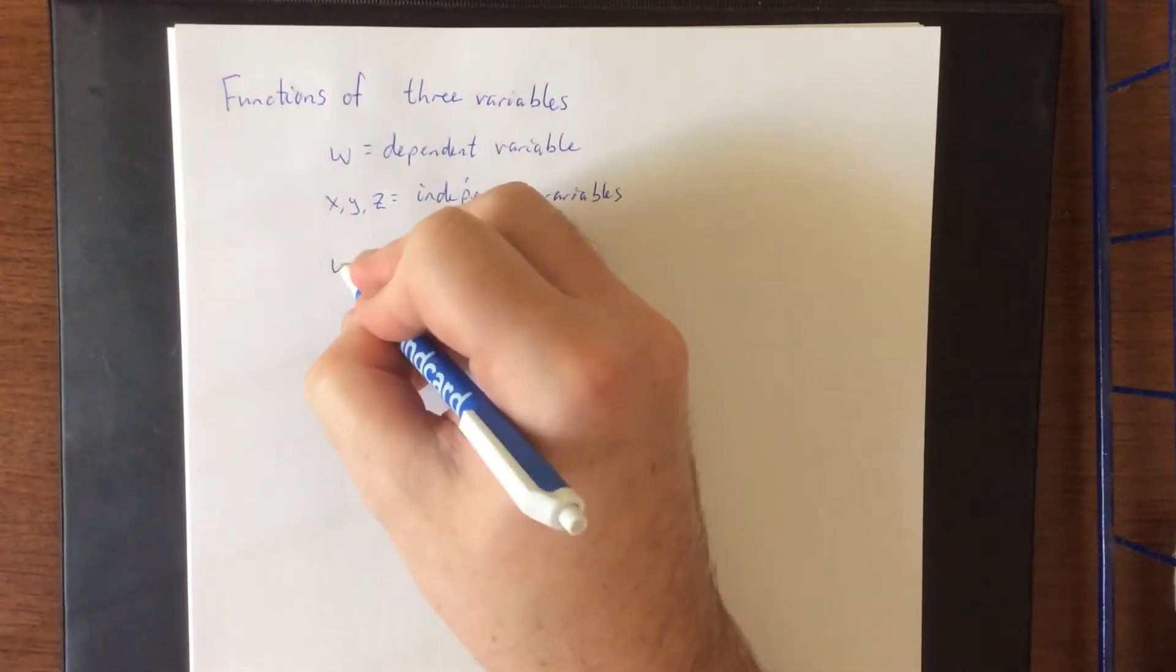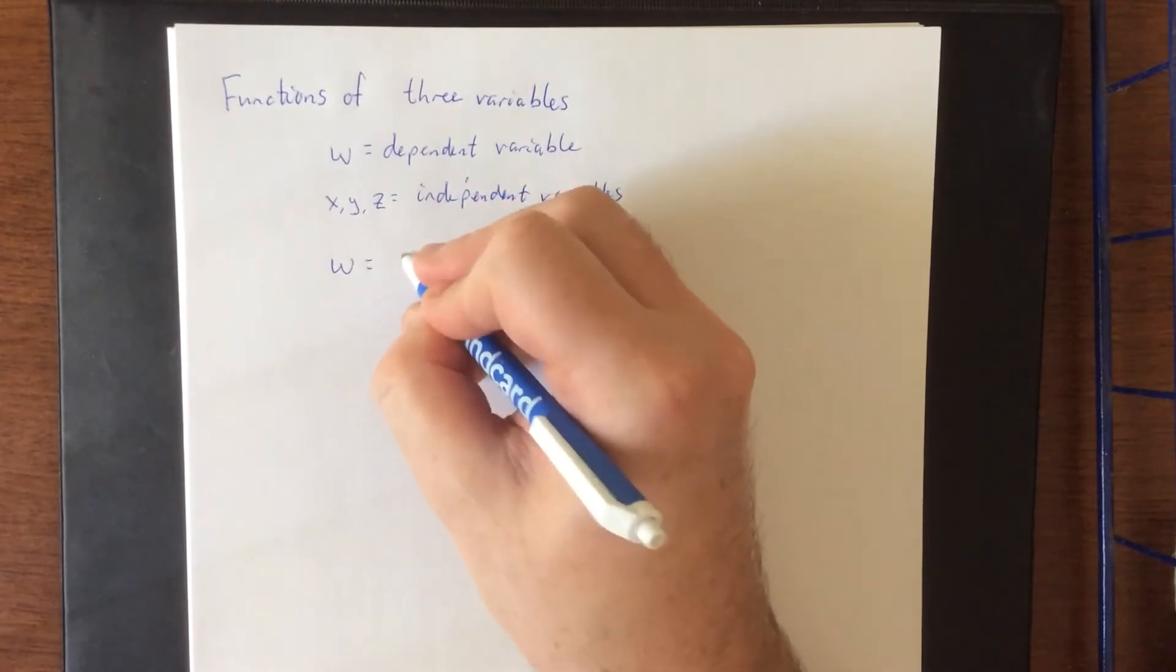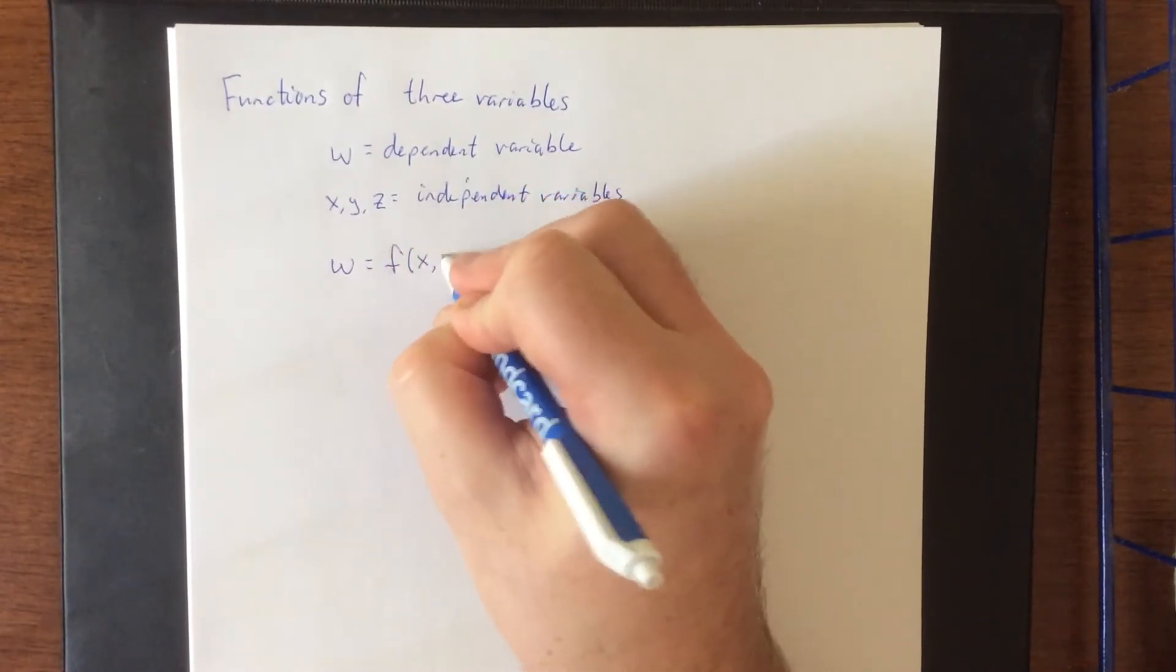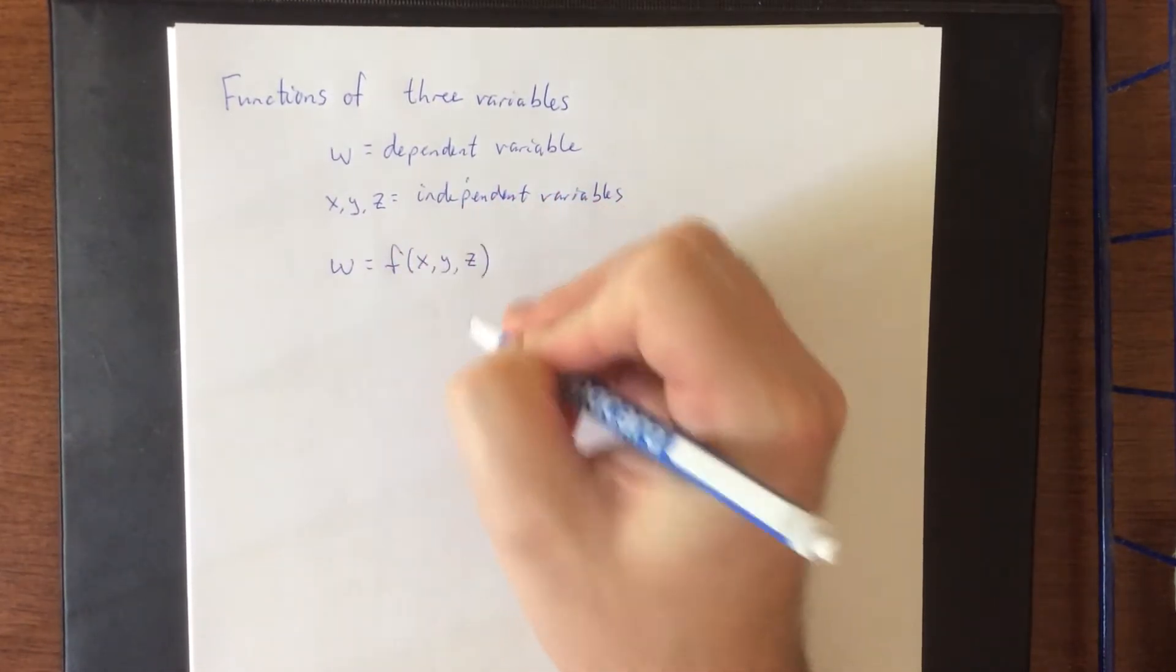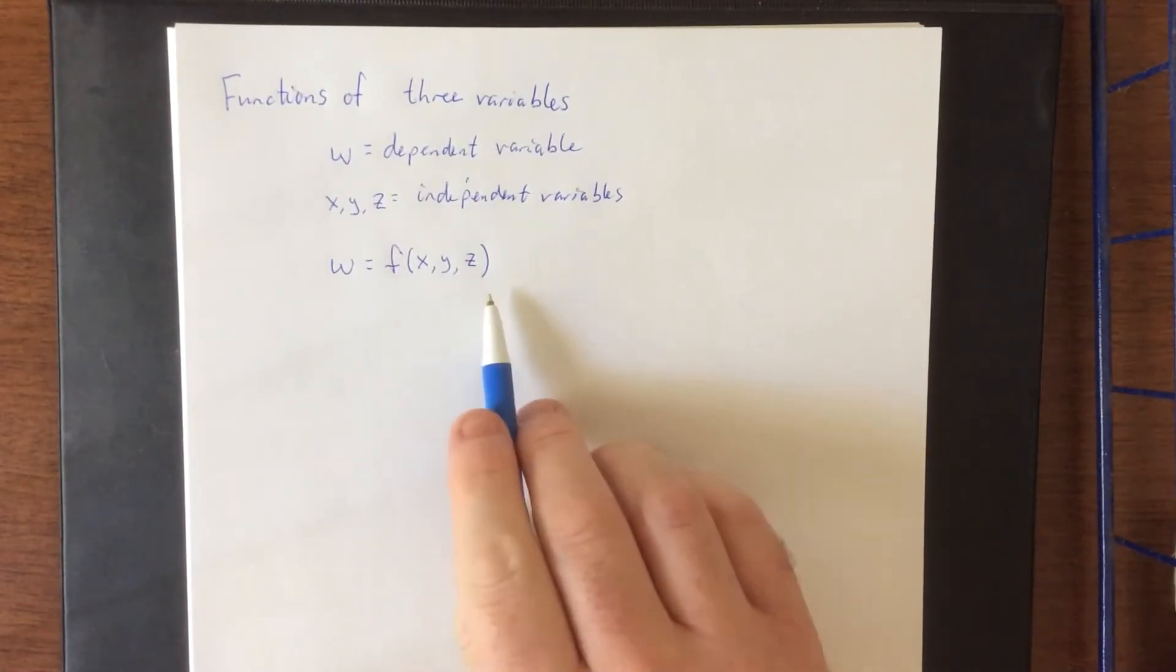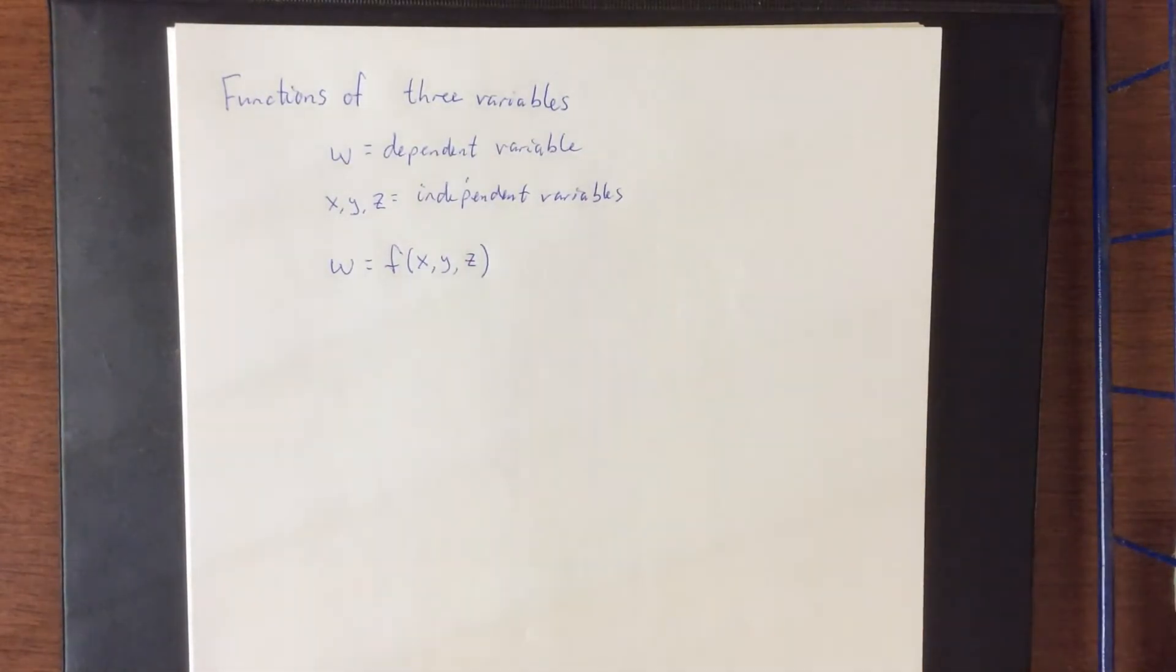When it comes to the notation that we use for this, this would be w is equal to some function of x and y and z. Typically, what we try to do is keep the independent variables in alphabetical order wherever possible.